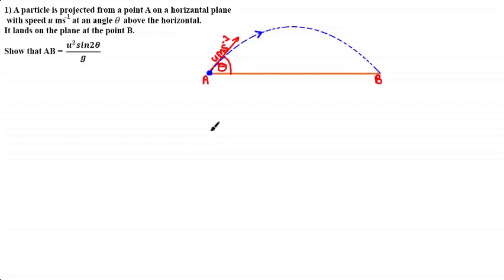Welcome to the second tutorial on show-that questions for projectile motion. A particle is projected from a point A on a horizontal plane with a speed u meters per second at an angle of theta above the horizontal. It lands on the plane at point B. Show that AB is equal to u squared sine 2 theta over g. Feel free to pause and have a go yourself — when you come back I'll show you an approach to proving this equation.